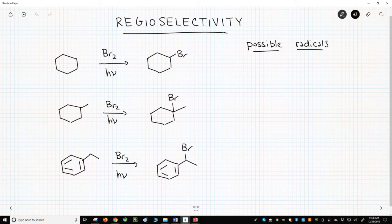The one possible radical is the cyclohexyl radical, so bromocyclohexane is the product.